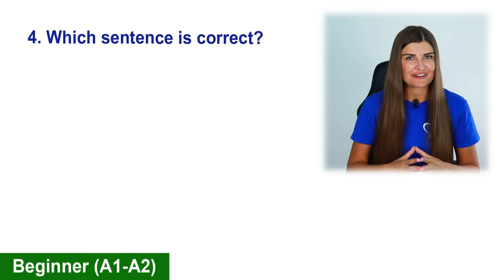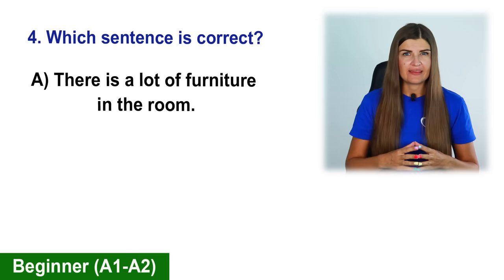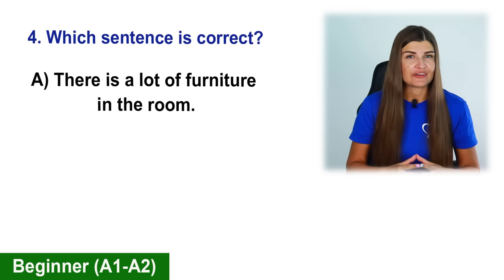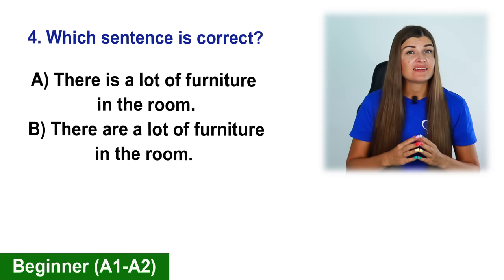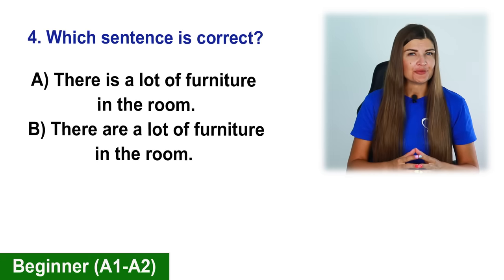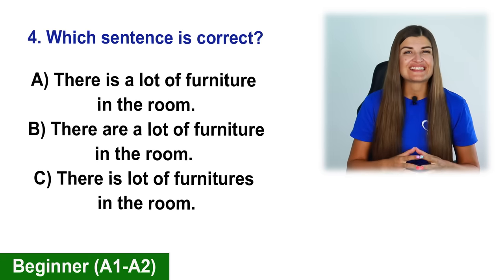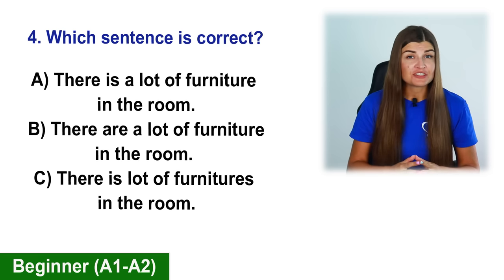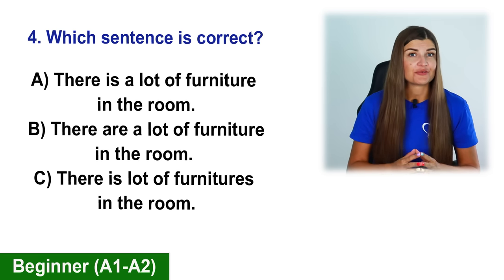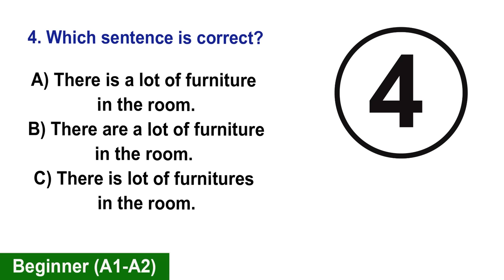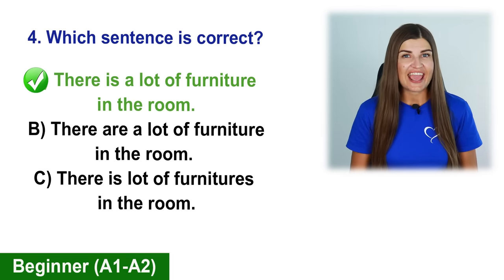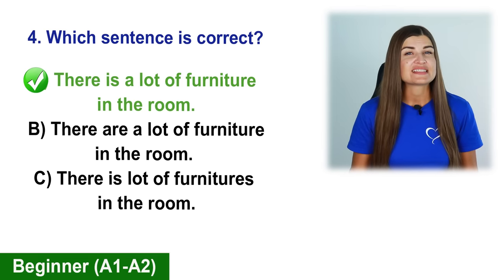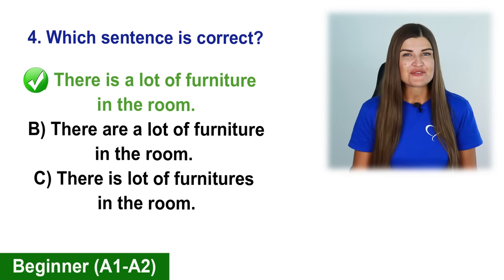Which sentence is correct? A. There is a lot of furniture in the room. B. There are a lot of furniture in the room. C. There is a lot of furnitures in the room. The correct sentence is A: There is a lot of furniture in the room.